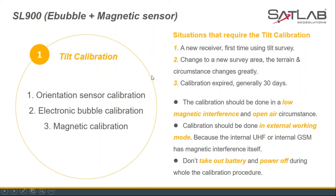Third, calibration expires — it is usually valid for only 30 days. During calibration, the following precautions apply: the calibration should be done in a magnetically interference-free, open-air environment; the receiver should be in external working mode, because internal UHF or internal GSM mode will cause magnetic interference. Third, do not remove the battery or power off the receiver during the whole calibration process.